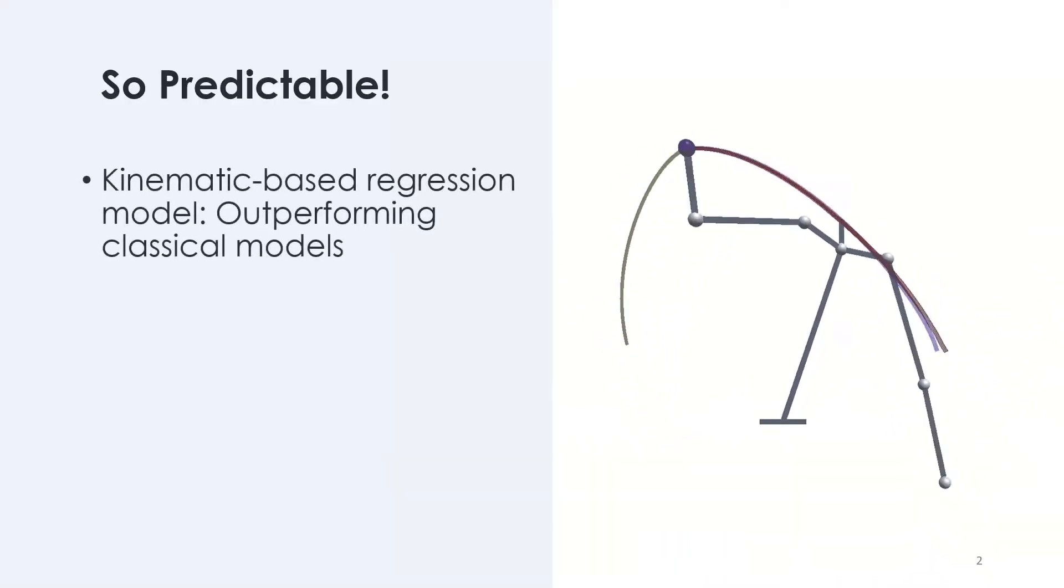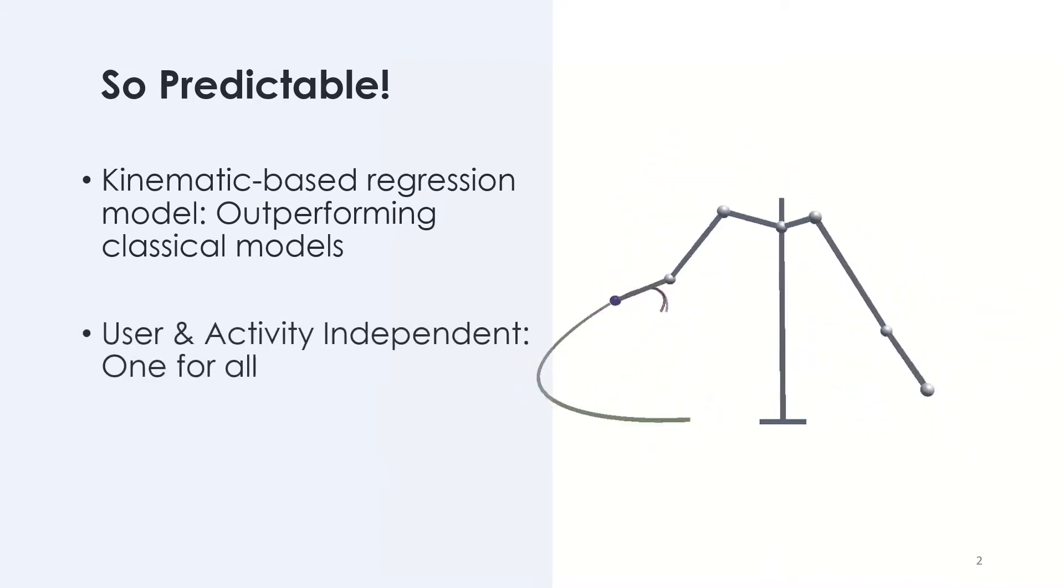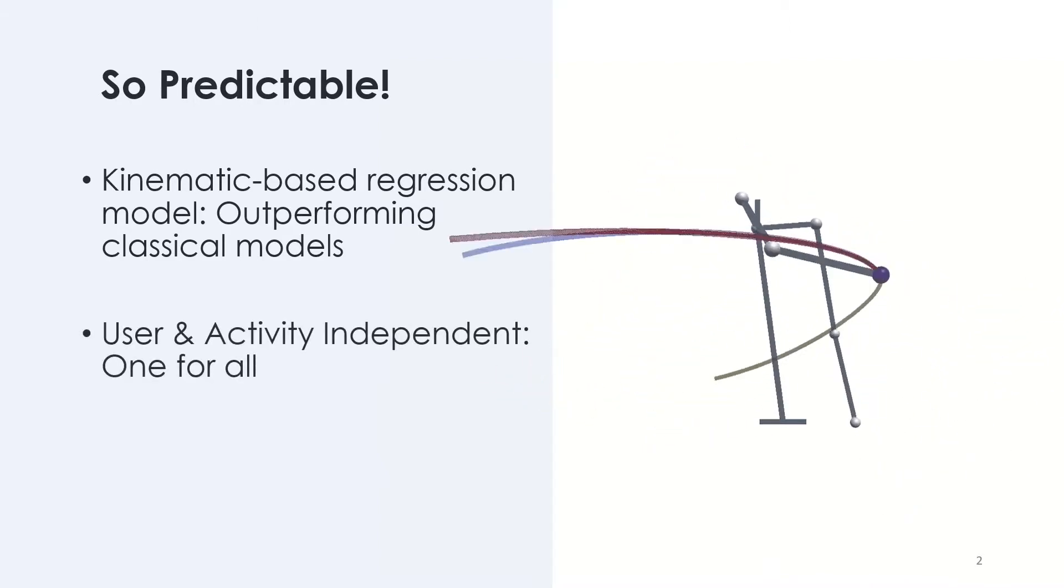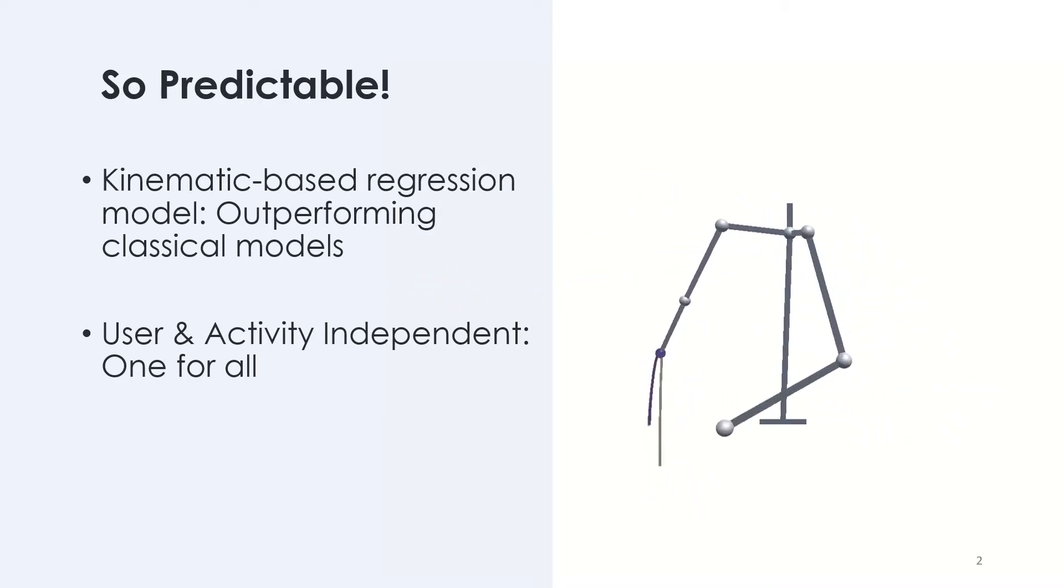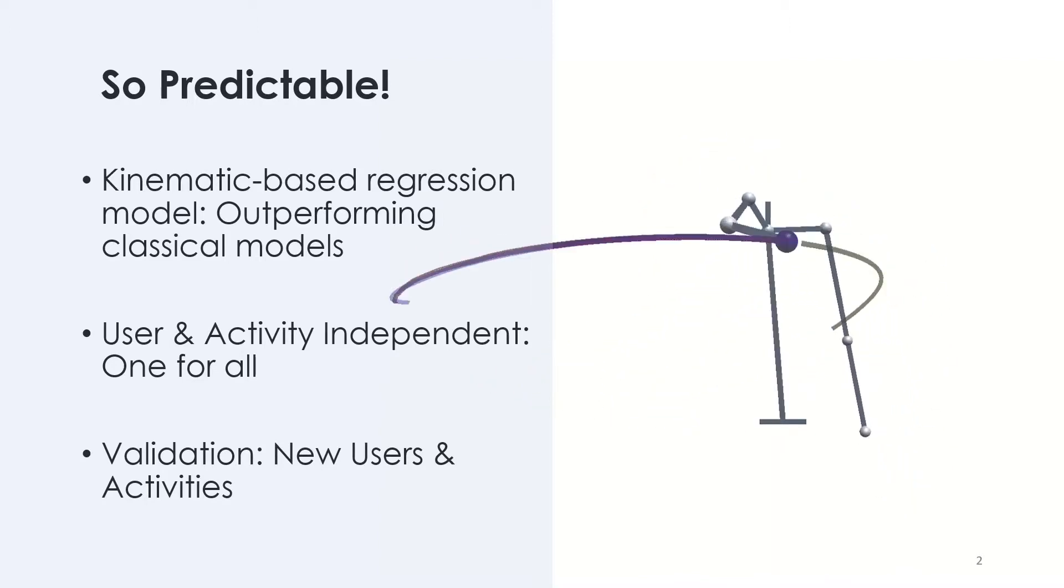In this work, we present a kinematics-based regression model for ballistic hand movements in VR which outperforms classical kinematics models. Our model is both user and activity independent which makes it usable without additional training. And to validate our model, we also conducted a follow-up study with new users and activities.